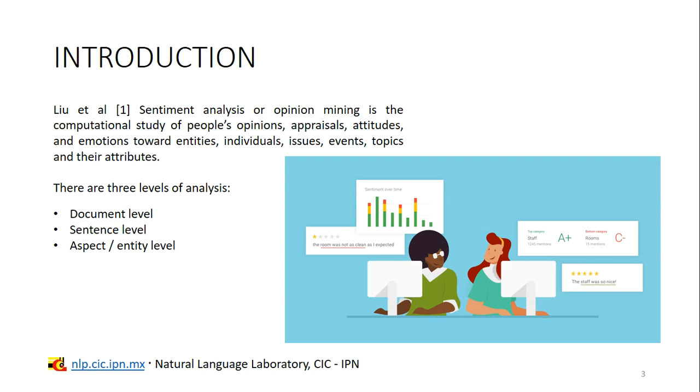Document level classifies an opinion document, like a product review, as expressing a positive or negative opinion or sentiment. It considers the whole document as the basic information unit. Sentence level classifies individual sentences, which constitute an entire document, as expressing a positive or negative opinion or sentiment.